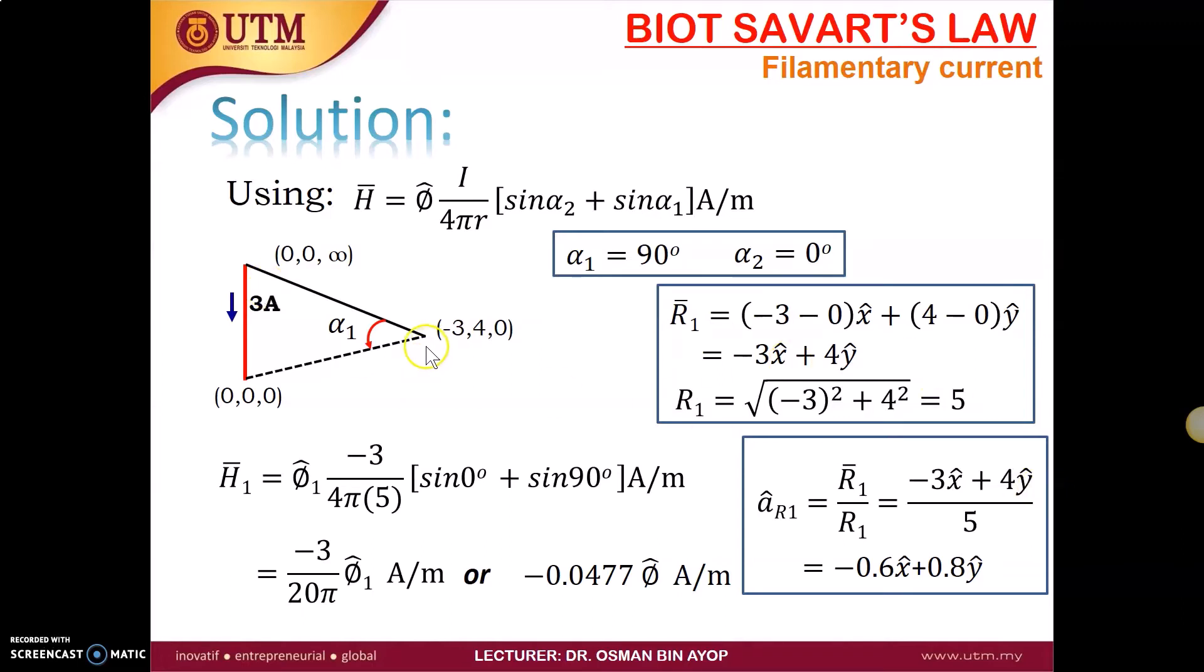Oh, no. In this case, not really. Because we only can minus this point to this point. So you got minus 3 minus 0, x plus 4 minus 0, y. So this is the vector R. Negative 3x plus 4y. And the magnitude can be a square root of 3 square plus 4 square, which is 5. So the distance here or the magnitude here is 5. Okay. We assume to be 5 meter. So when you put everything inside, you got H₁ equal to minus 0.0477 phi ampere per meter.